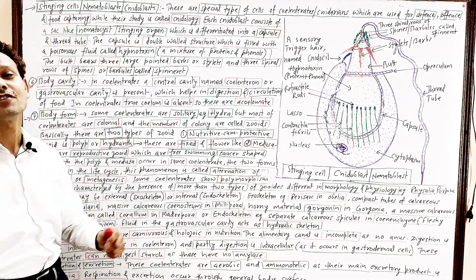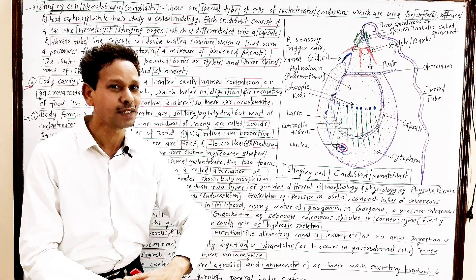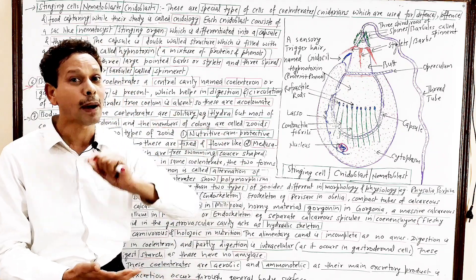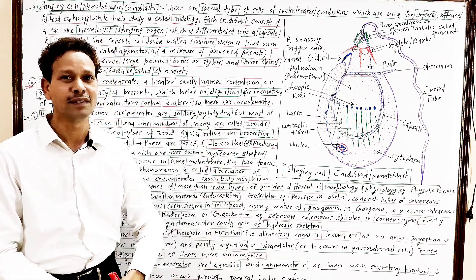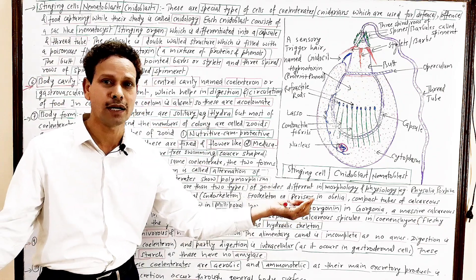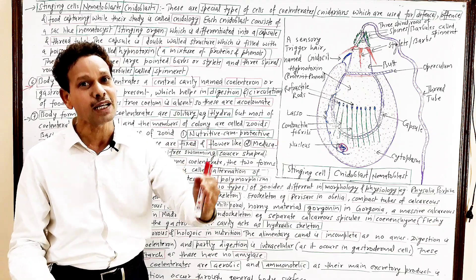And in case of digestion, these are carnivores. There is no amylase. It means in all coelenterates, there is no digestion of starch. Means starch remains undigested.